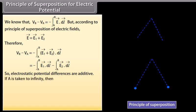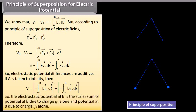If A is taken to infinity, then V equals the sum of minus integration from infinity to B of E1 vector dot dL vector and minus integration from infinity to B of E2 vector dot dL vector. So the electrostatic potential at B is the scalar sum of the potential at B due to charge Q1 alone and the potential at B due to charge Q2 alone. This result is applicable for any number of charges.